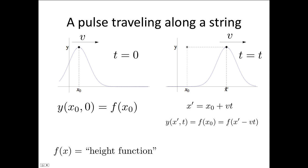y of x dash at time t, that's this peak height, is the same as the peak height over here. So the peak height over here was f of x0. So we can write this is equal to f of x0.